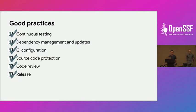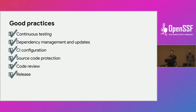Scorecard attempts to detect if good practices are followed. For example: do projects do continuous testing and fuzzing? This is critical because it reduces the number of bugs in the source code. It also looks at whether projects update their dependencies — important so that you patch vulnerabilities. Does it have safe configuration settings, like code protection? If that setting isn't enabled, malicious developers can push source code.